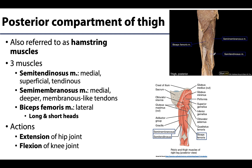The muscles in the posterior compartment of the thigh are more commonly referred to as the hamstring muscles, and this name is not a particularly glamorous one. It's named after the common method of hanging pork thighs or hams around the tendons of these muscles — so hamstrings, strings indicating the tendons. It is so commonly used it cannot be avoided, and so do understand when we're talking about the posterior compartment you will often hear this referred to as the hamstrings or the hammies.